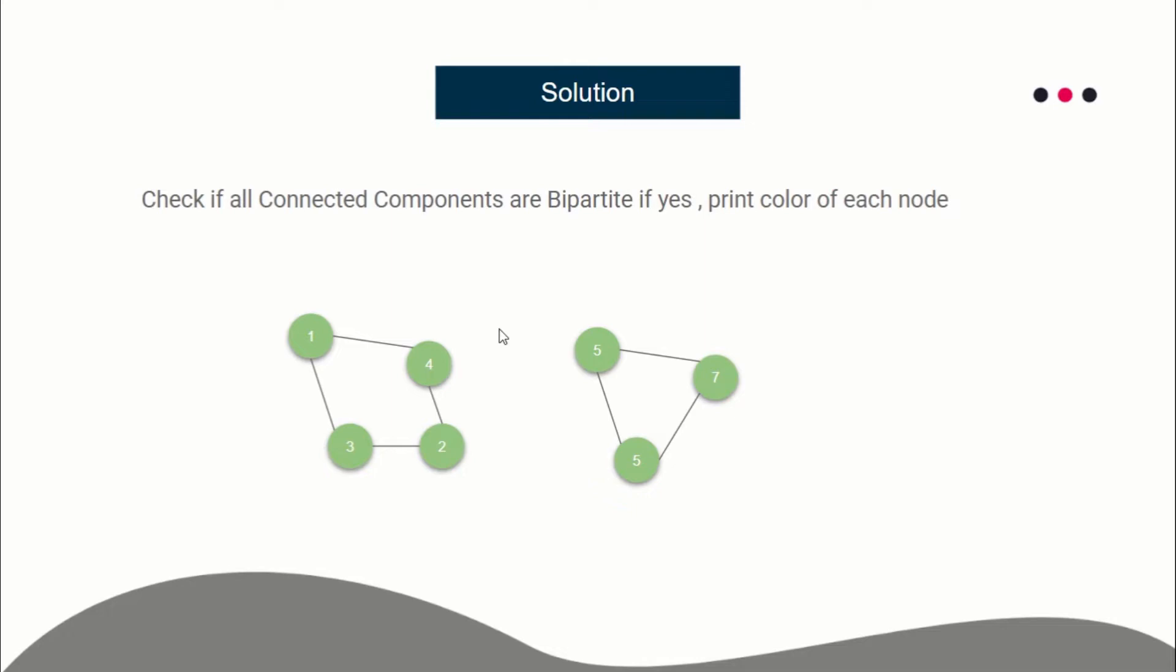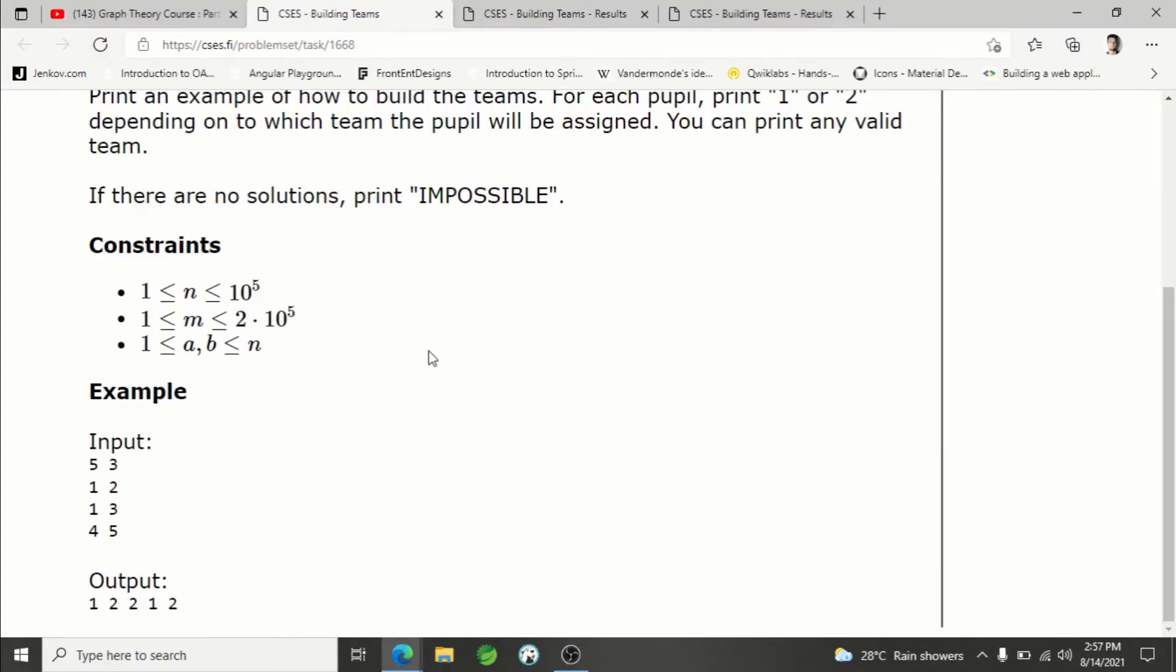So if even a single connected component is not bipartite, you have to print impossible. Otherwise, we will go through all of the connected components and color each of the nodes in either zero or one color, and using that color you can print them. All of the nodes which are colored zero you can print as one, all of the nodes which are colored one you can print as two. So each of the nodes will be divided into two different teams based on their color.